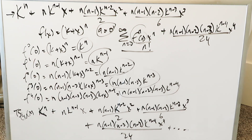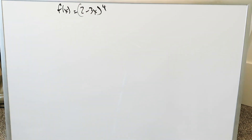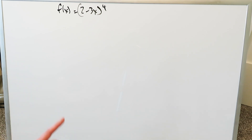This entire verification procedure is complete. I want to end with a concise practical example to bring everything home. Our function is the binomial (2 − 3x)^4. We'll expand it as a binomial series using the binomial theorem and also view it as a Maclaurin/Taylor series, showing they are exactly the same.